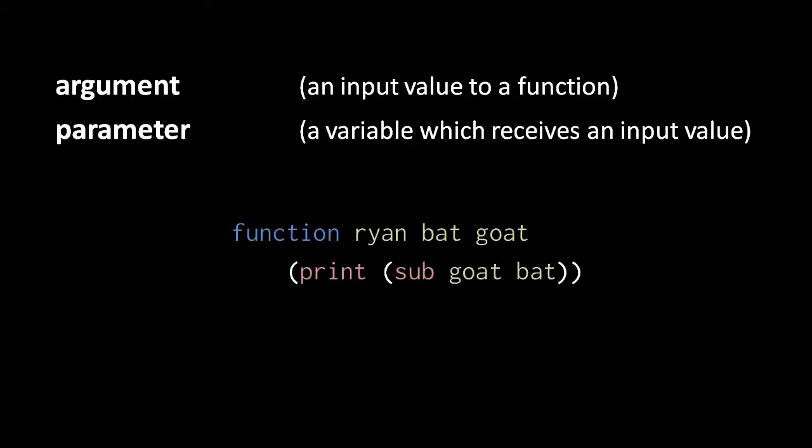So here, for example, we create a function we call Ryan, and we give it two parameters, the first called bat, and the second called goat. Then in the body of this function, what we'll do is subtract the value of bat from goat, and print the resulting value.